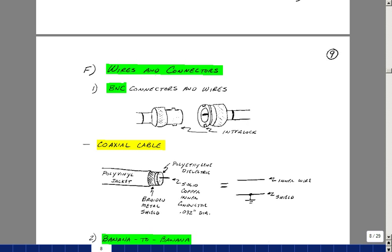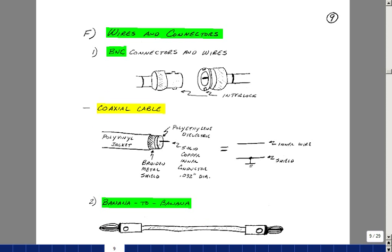In lab, we're going to use a variety of wires and connectors. The majority of which are going to be called BNC connectors and BNC wires. The BNC cable consists of a plastic jacket covering a braid, an enclosure of the actual wire in the center, which is separated from that braid with an insulator. Really what we've got is an inner wire and then an outer shield. Usually we're grounding the outer shield.